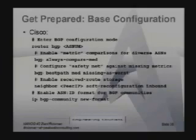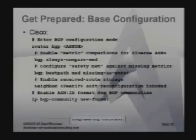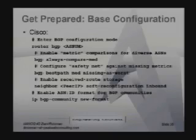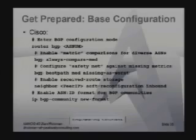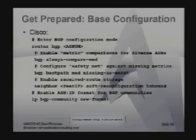Let me show you what a base configuration looks like. In the Cisco world, base configuration starts with router BGP and your AS number. You need to turn on metric comparison for diverse ASNs — simply say BGP always compare MED. Put a safety net on in case there's a missing metric — best path MED missing is worse. By default on Cisco, no metric coming in turns into a metric of zero, which is the best lowest possible value. This setting will set any missing metric to 4.2 billion, which is the worst possible value, so it won't accidentally be selected. Turn on software configuration inbound to store all the routes in RAM. And in Cisco, for legacy reasons they store communities in long integer strings — turn on BGP community new format, because everyone else does it by default and it's a lot easier to read.